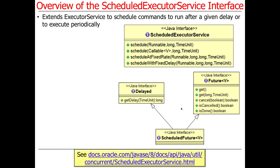So what is the scheduled executor service? It's essentially another variant of executor service, and it allows you to schedule commands that will run after a given delay. You can say, here's some code, run this in a minute or 30 seconds. You can also say, here's some code to run every five minutes, so you can have things executed periodically. You can schedule code to run in the future, and also schedule it to run at some kind of recurring rate.